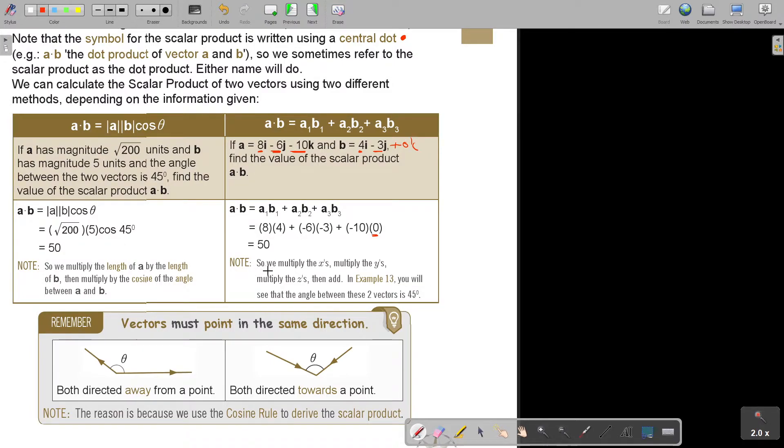We multiply the X, multiply the Ys, multiply the Zs, then add the scalars. In example 13, you will see that the angle between these vectors is 45 degrees. So, find the value of the scalar product A, B. In this case, I was doing this, and I got 50.